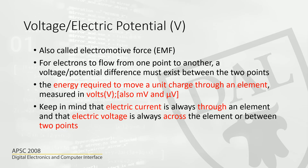Pretty much all those terms mean the same thing. For electrons to move from one point to the other, this potential difference is necessary. For example, the alkaline batteries commonly used in a remote or any digital device have 1.5 volts, which means there is a potential difference of 1.5 volts between the positive and negative terminals. This force is required to push the electrons through the circuit.